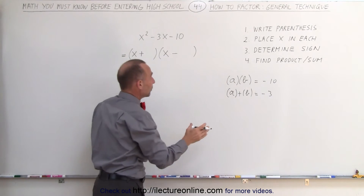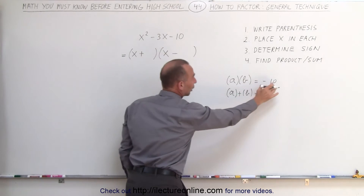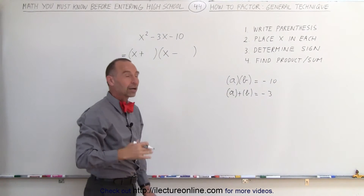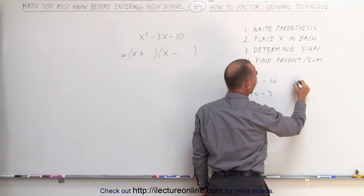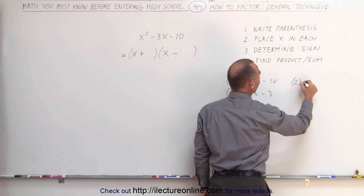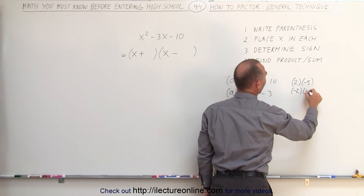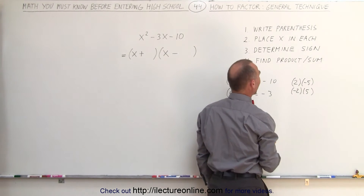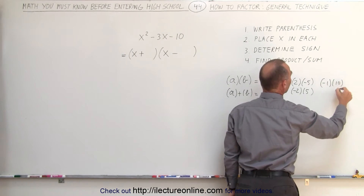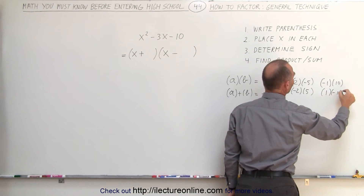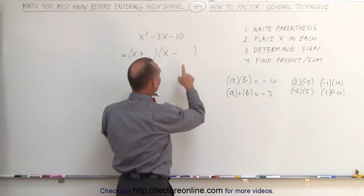Of course, you already realize that one of them must be a negative number and the other must be positive in order to get negative 10. The only way to get negative 10 is to multiply 2 and 5, and one of them must be negative — so it's either negative 2 and positive 5, or positive 2 and negative 5, or negative 1 and positive 10, or positive 1 and negative 10. These are the four combinations in which you can get negative 10.